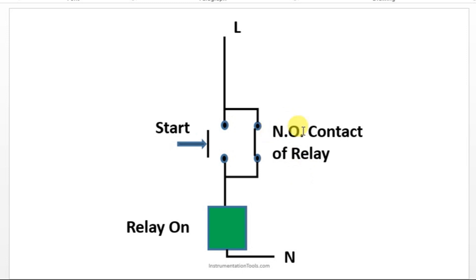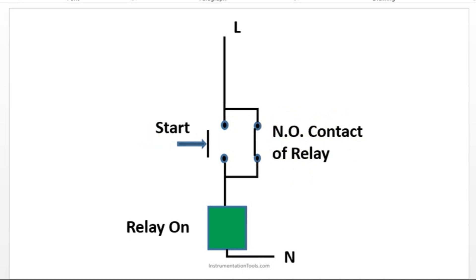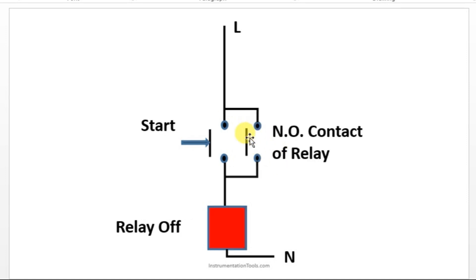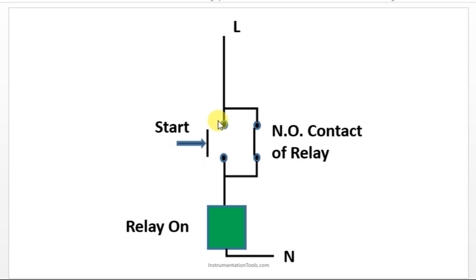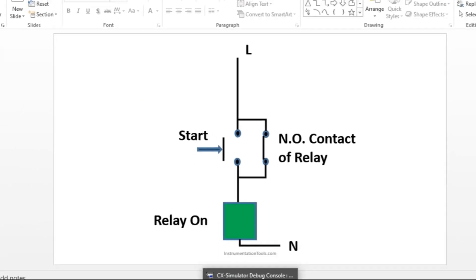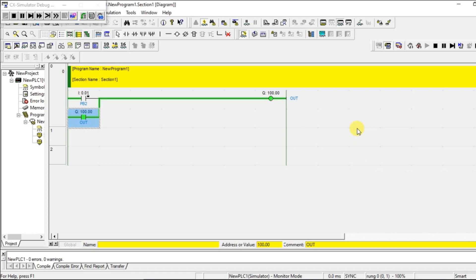This is the input and this is the output contact. Looking at the slides: we have a push button and a normally open contact of the relay connected in parallel with the push button. Once you press the switch, the relay turns on, and the relay memory contact is also on. Power comes from both routes. If you cut this route, power takes the relay contact route — so the relay stays on. This is latching — very important in PLC programming. I hope you understood this logic. I'll meet you in the next session. Please like and subscribe our YouTube channel for more updates.